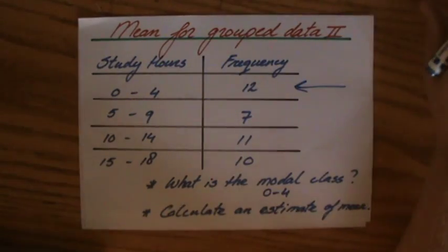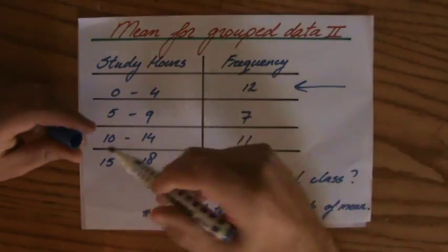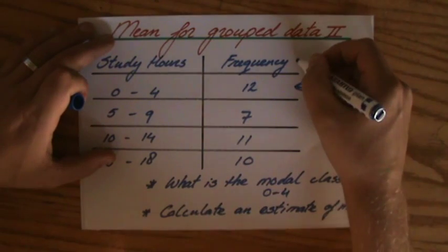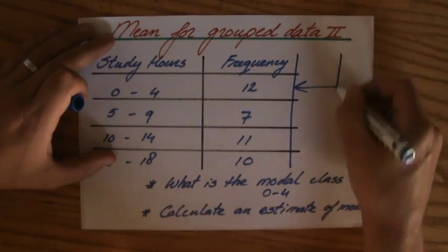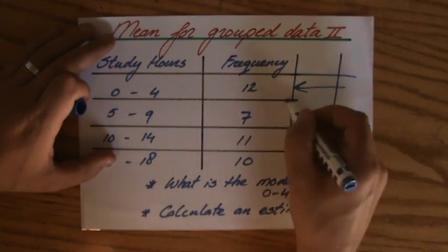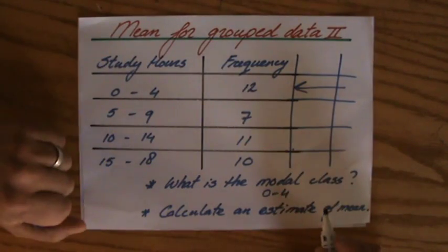Okay, but now calculate an estimate of the mean. We don't know the exact values. So what do we have to do? I told you in a previous video, we have to take those mean values, those mean points, don't we?